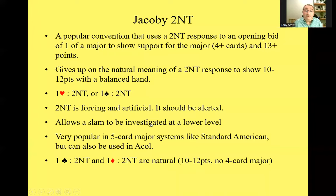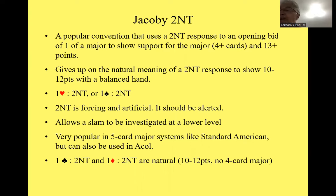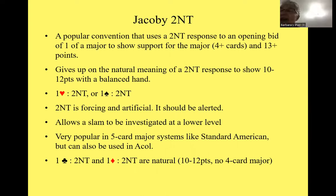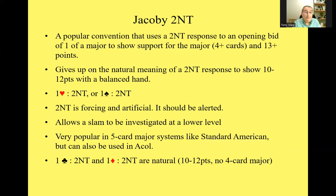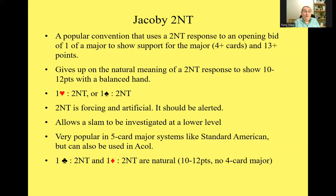One club Two No Trump or one diamond Two No Trump remain natural, and they show a balanced hand with 10 to 12 points and no four card major. A question came up: what about the Unusual Two No Trump? That's a completely different convention. The Unusual Two No Trump is when the opponents open one of a suit and you jump to Two No Trump — whereas Jacoby is when your partner opens one heart and you respond Two No Trump. So it's completely different to the Unusual Two No Trump.